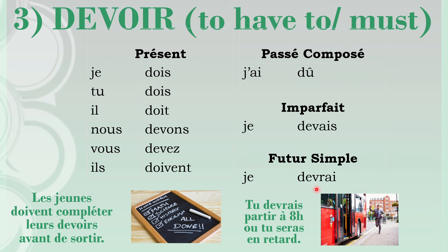'Tu devrais partir à 8 heures ou tu seras en retard' — you should leave by eight o'clock or you will be late. Here devoir is in the conditional, formed with the future root followed by the imparfait ending, giving the meaning 'should.' 'Les jeunes doivent compléter leur devoir avant de sortir' — the young ones must complete their homework before they go out. Here doivent is the present tense form for ils.